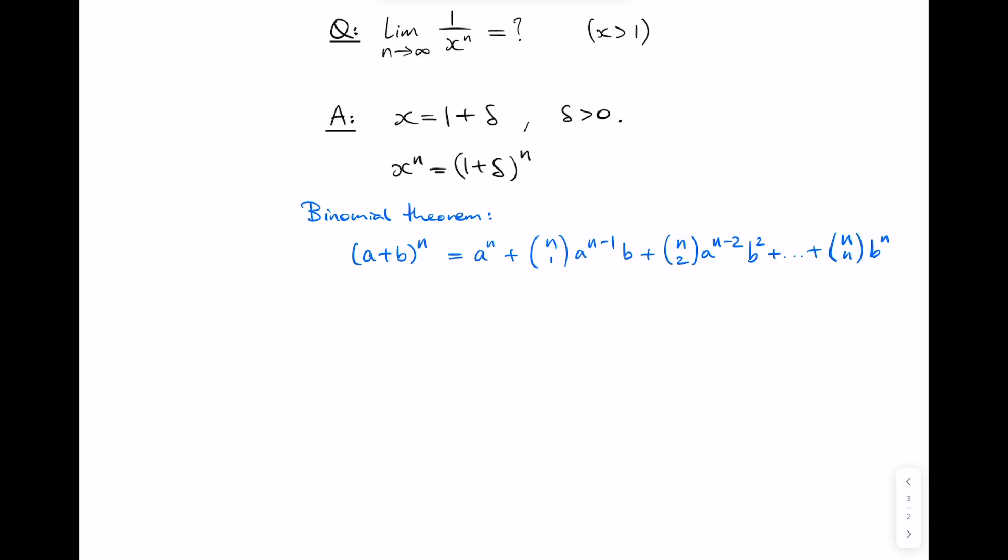Now if we apply this to our case, we get x to the n is equal to 1 to the n plus n times 1 to the n minus 1 times delta, and some other terms, and the last one being 1 times delta to the n. Actually, we're just interested in these two terms here.